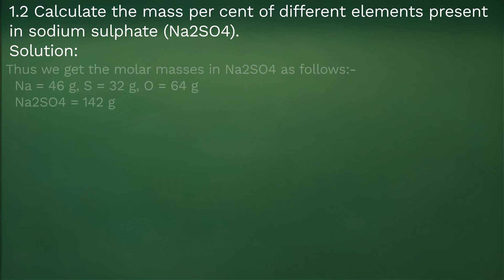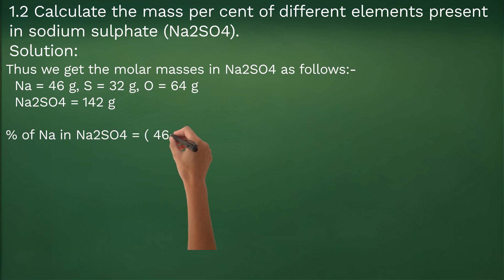Now let's calculate the percentage. Percentage of sodium comes out to be 46 divided by 142 times 100 equal to 32.39 percent.